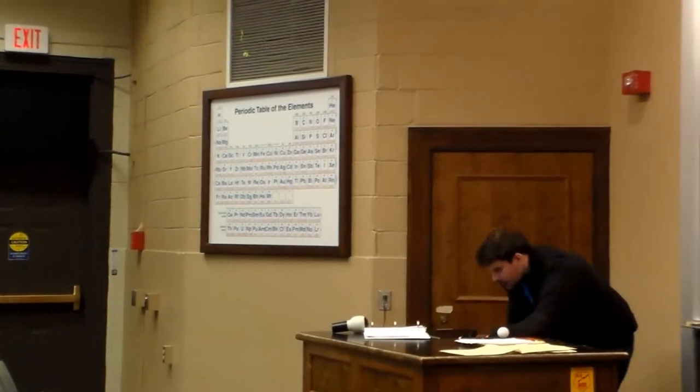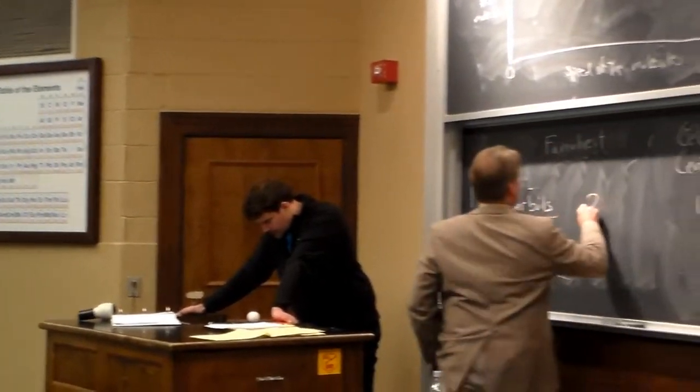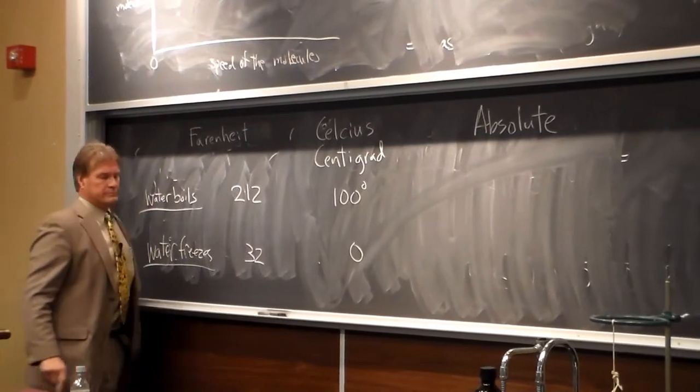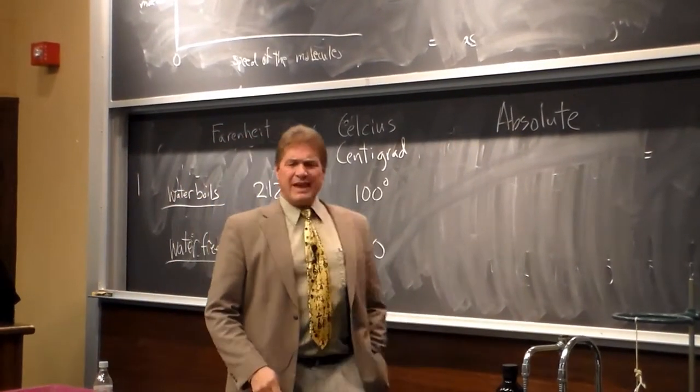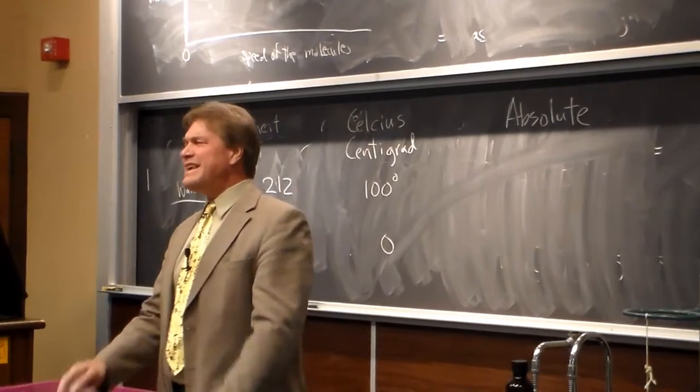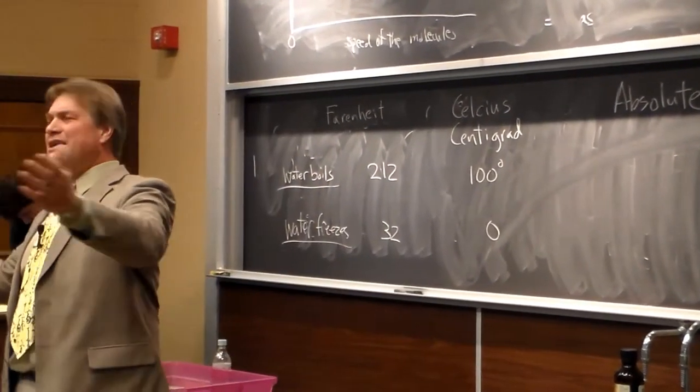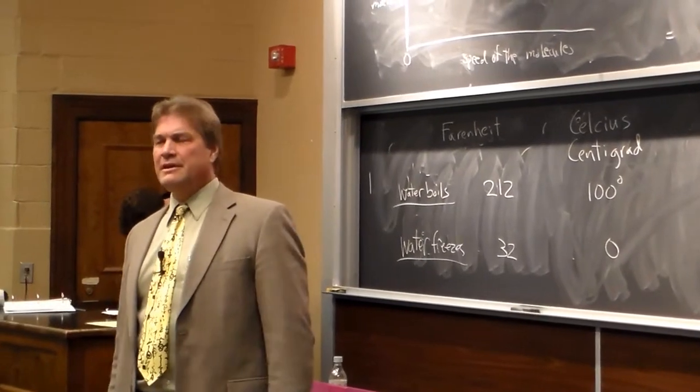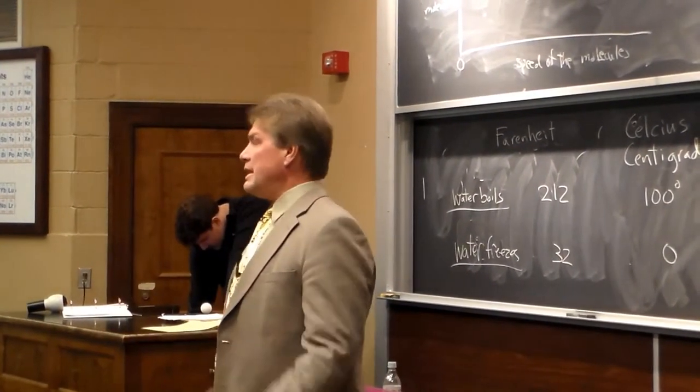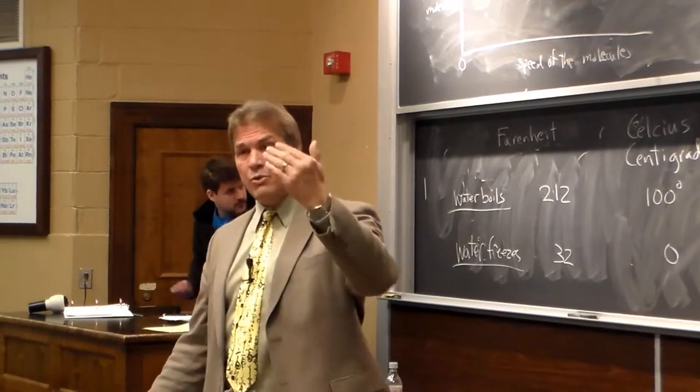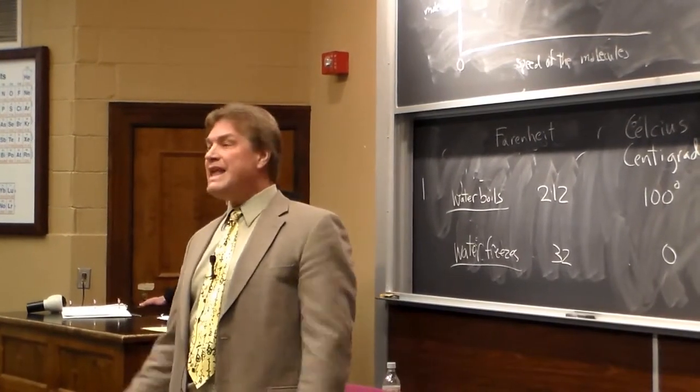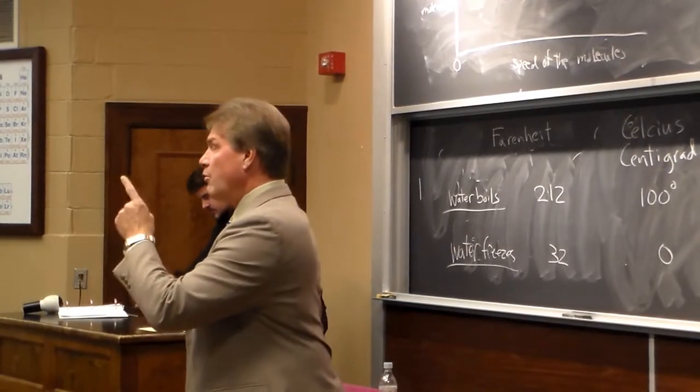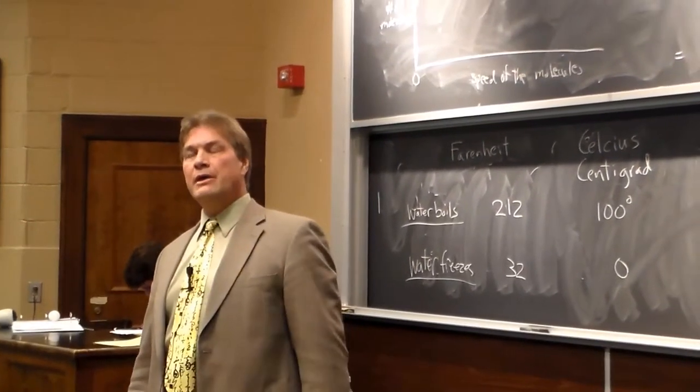In Fahrenheit, water boils at 212 and freezes at 32. And you might say that doesn't make any sense. Why would Dr. Fahrenheit pick 212 and 32? He didn't pick 212 and 32. He, like any other good scientist, picked 100 and zero, and not for when water would boil or freeze, but rather 100 is the temperature of the human body.